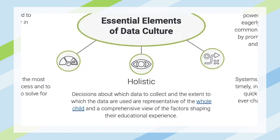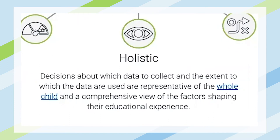This last element is the idea that we want our data systems to represent a holistic view of our system. We want to make decisions about the data that we collect and the extent to which we use it that are representative of the whole child. That links to the ASCD definition and provides us with a comprehensive view of all the factors that shape a student's educational experience.